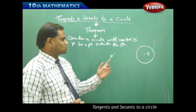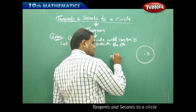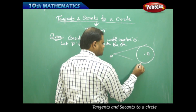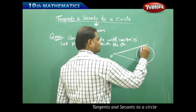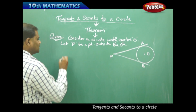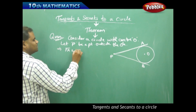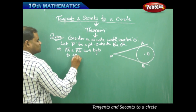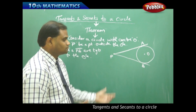From P, we draw two tangents to the circle — one tangent touching at A and another tangent touching at B. Therefore PA and PB are tangents to the circle with center O.